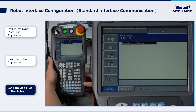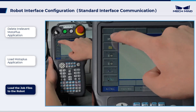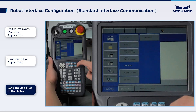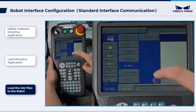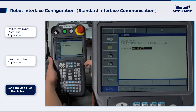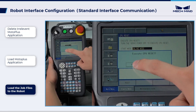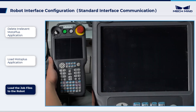After the installation of the MotoPlus application, select System Info, CPU Reset and restart the robot. The robot will enter online mode after the restart is completed.